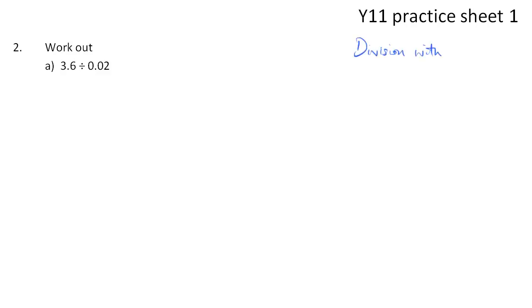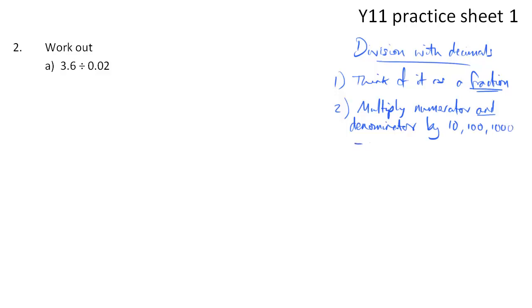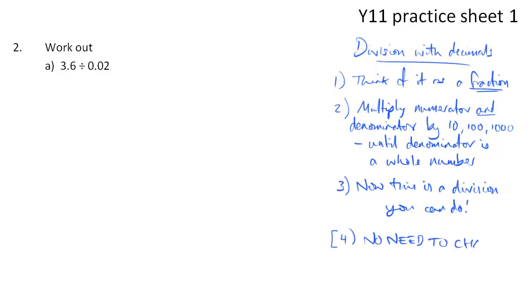Question 2 is all about division with decimals, and these are steps that I follow every time. First of all, think of your decimal as a fraction. Then take that fraction and multiply the numerator and denominator, the top and the bottom, by either 10 or 100 or 1,000, whatever it takes to make the denominator, the number on the bottom, a whole number. The reason being that when we do that, we get a sum that you can do. You can divide by a whole number using short division, long division, your normal method for dividing. And just please remember that when you get to the end, you don't need to change the final answer.